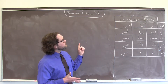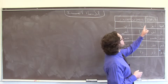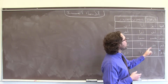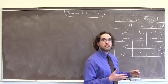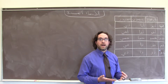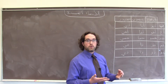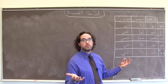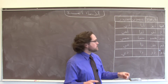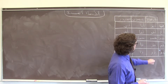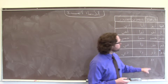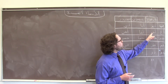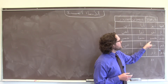Luckily for us, there is some vowel harmony here, because we know that a normal singular noun, if it is in the مرفوع case — if it's the subject of a جملة اسمية — is going to take الضمّة. And here we attach a واو to the end of these words.